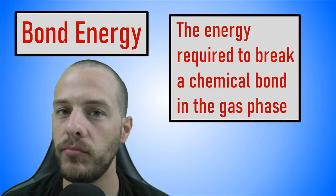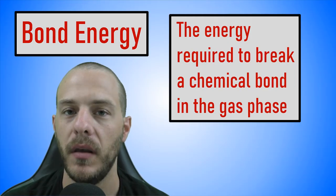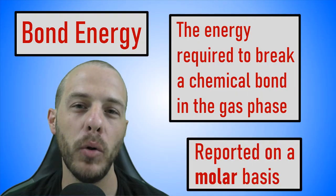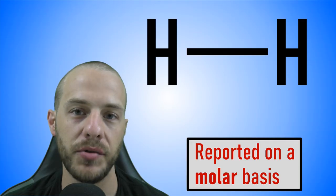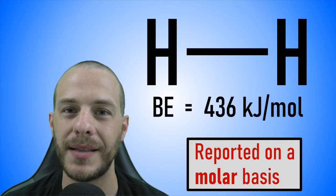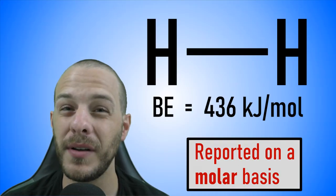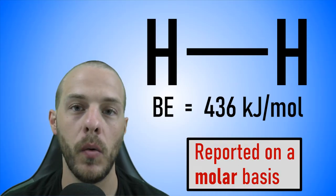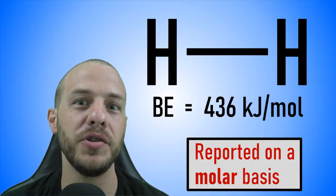So as I mentioned earlier, bond energy is the energy required to break a chemical bond in the gas phase. In chemistry textbooks, bond energies are most commonly reported on a molar basis. For instance, the bond energy of a hydrogen-hydrogen bond is 436 kilojoules per mole. In other words, it takes 436 kilojoules to break one mole of — 6.022 × 10²³ — hydrogen-hydrogen bonds.